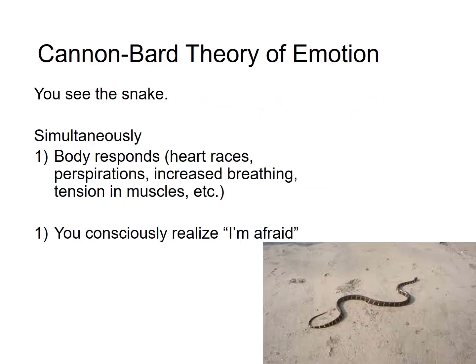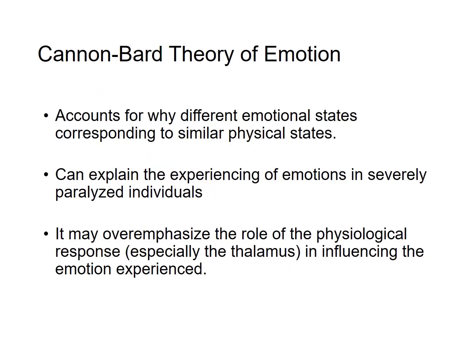The Cannon-Bard theory improves upon the weaknesses of the James-Lange theory. Here, an event like seeing a snake produces two things simultaneously: the body responding — heart racing, perspiration, increased breathing, muscle tension — and at the same time, a conscious awareness of what the emotion is, such as fear. The model accounts for why different emotional states might correspond to the same physical states and explains the data from paralysis studies. However, some critics say it may overemphasize the role of the thalamus in emotion.